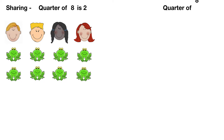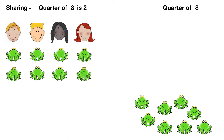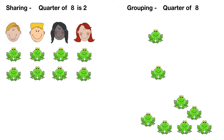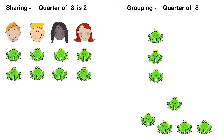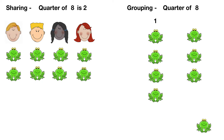Or we can find a quarter of eight by grouping in fours like this. One group of four, two groups of four — so a quarter of eight is two.